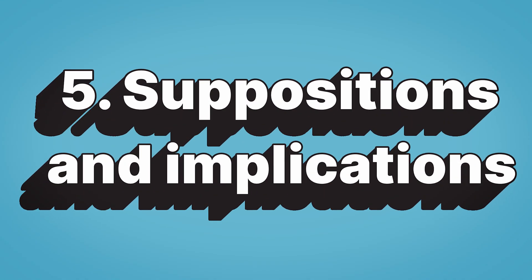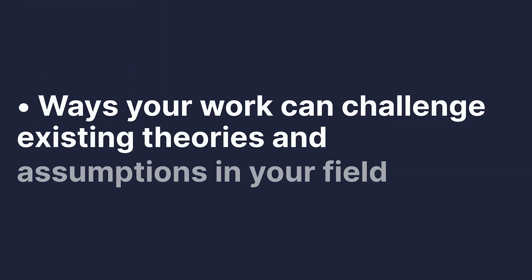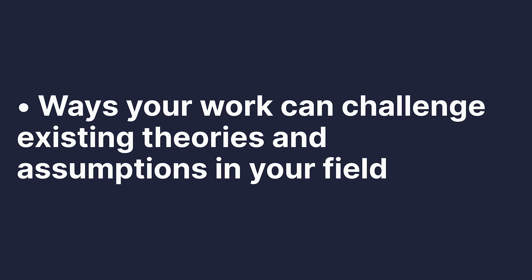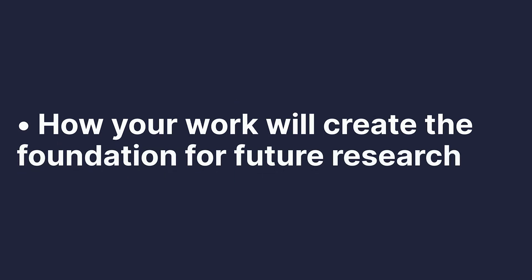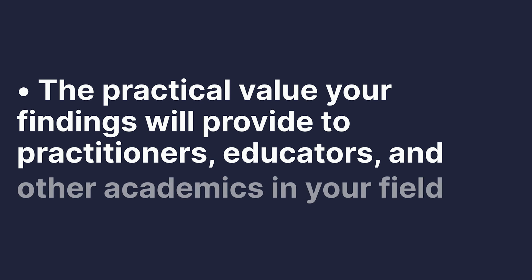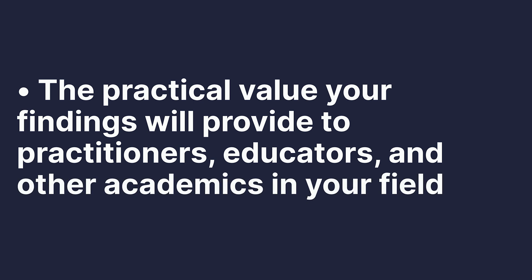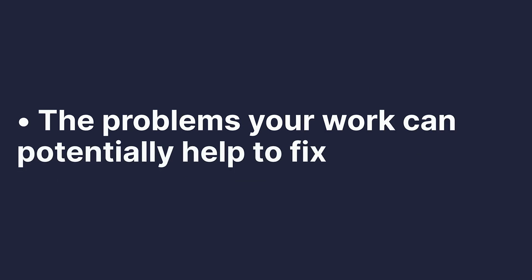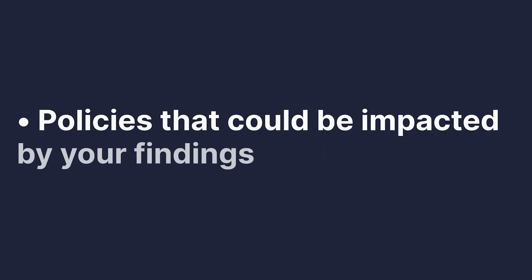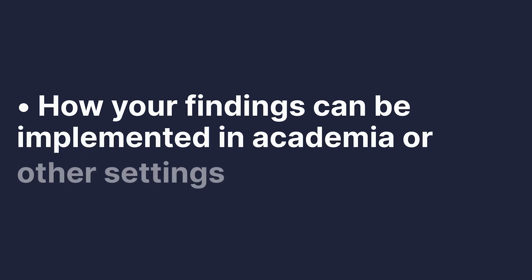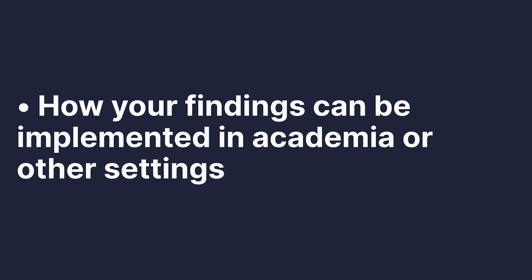Five: Suppositions and Implications. This section is perhaps the most critical in your research proposal argument because it expresses exactly why your research is necessary. Make sure you cover the following: ways your work can challenge existing theories and assumptions in your field, how your work will create the foundation for future research, the practical value your findings will provide to practitioners, educators, and other academics in your field, the problems your work can potentially help to fix, policies that could be impacted by your findings, and how your findings can be implemented in academia or other settings.